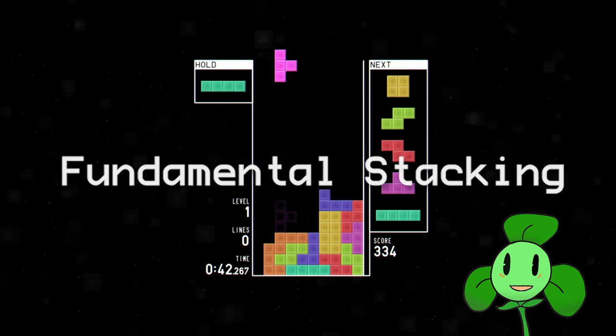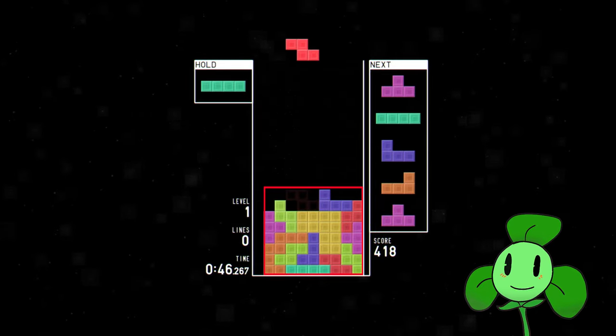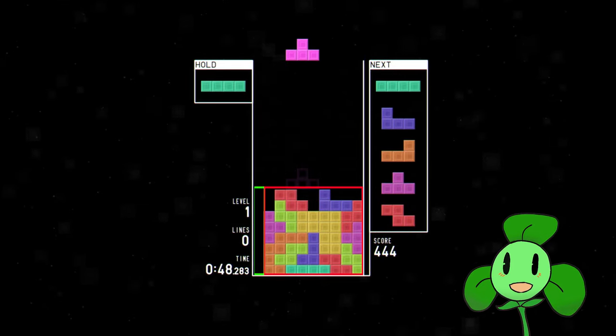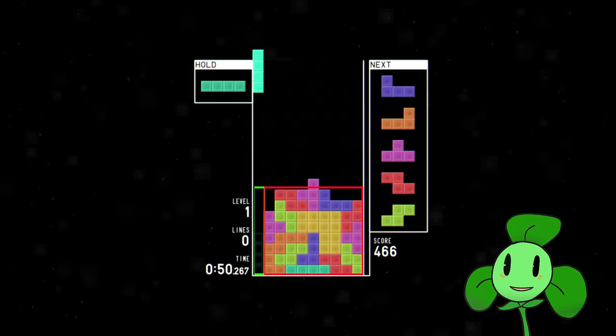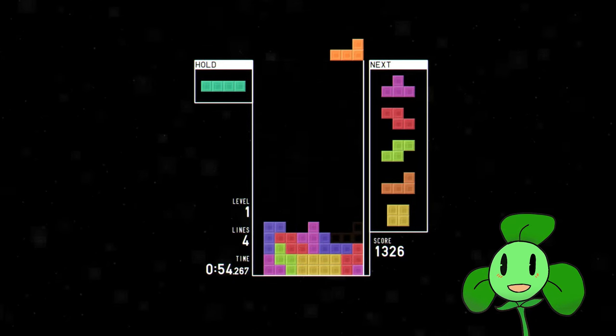The first thing you want to go over is stacking. If you look at this game, this is an ideal stack for a beginner. You want to stack up all your pieces on one side and leave an open well on the other. When you fill up four rows, you put the long I-piece in the hole, and that's a Tetris, or in this game it's called a quad.